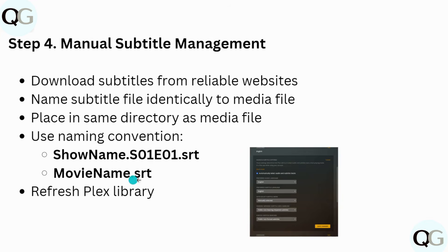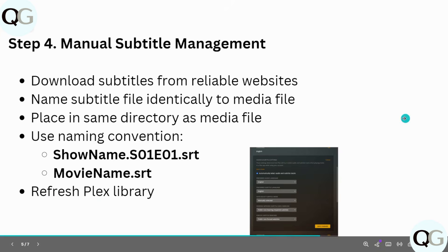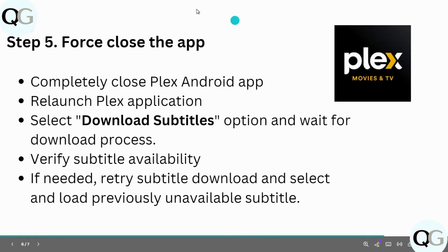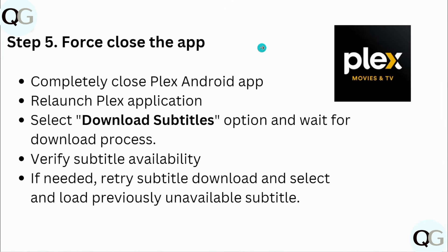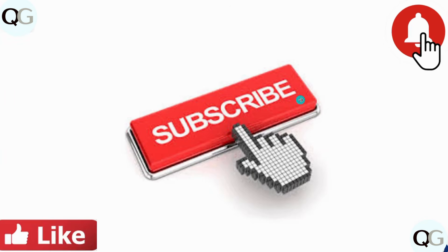Our next step will be to force close the app. Completely close the Plex Android app, then relaunch the Plex application. Select the download subtitles option and wait for the download process. Verify subtitle availability, and if needed retry the subtitle download and load previously unavailable subtitles.